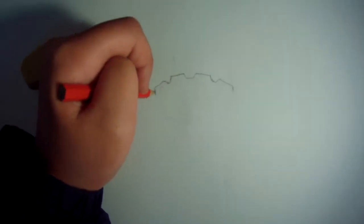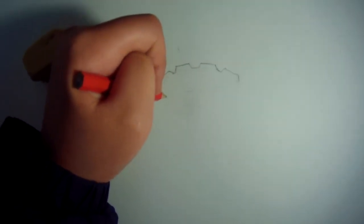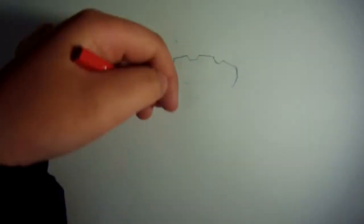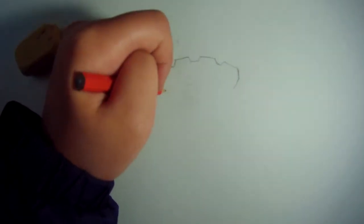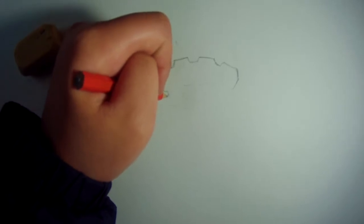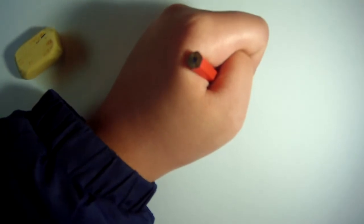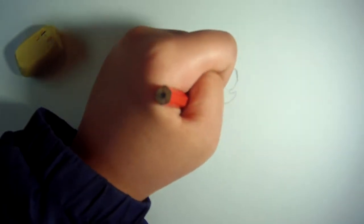You have to connect this down here to make it look like a pole or something. Then draw the part where you put your hands.